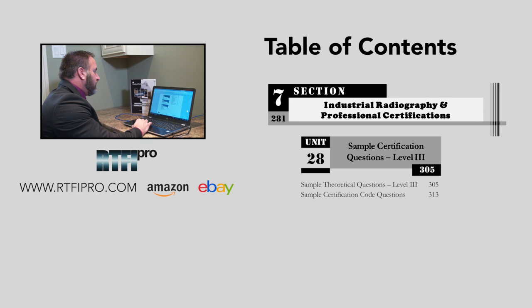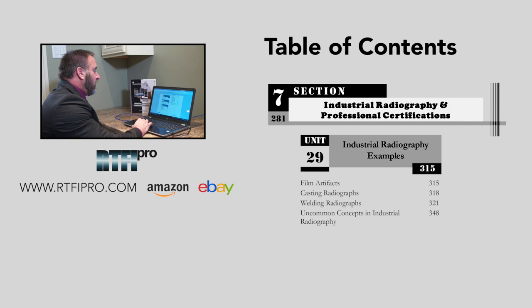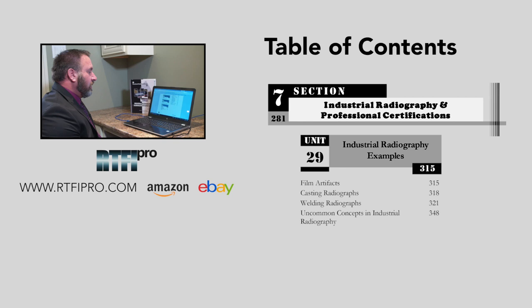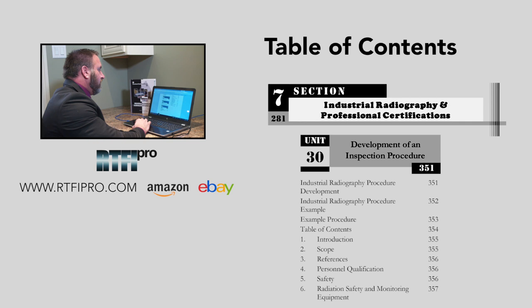Unit twenty-eight has around 100 Level 3 questions and 10 certification code questions: sample certification questions Level 3 and sample certification code questions. Unit twenty-nine covers industrial radiography examples — addressing a bunch of radiographs and their interpretations, including film artifacts, casting radiographs, welding radiographs, and uncommon concepts in industrial radiography.